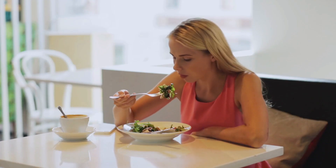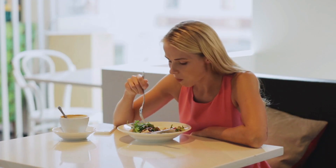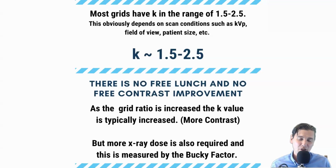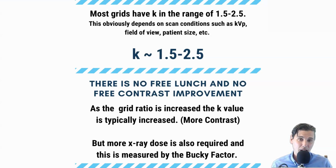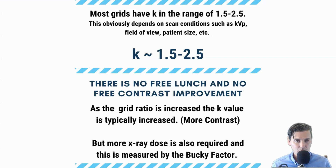There's no such thing as a free lunch in imaging. In general, the contrast improvement factor will be on the order of 1.5 to 2.5 — so about a factor of 2. But at the same time, we are stopping photons — preferentially stopping scattered photons — so the image is going to be noisier. If we want to get the same level of noise at the detector plane, we're going to have to increase the dose.